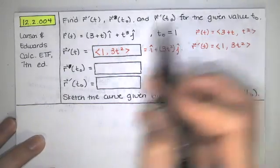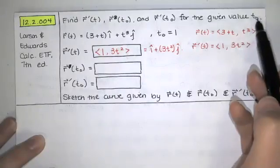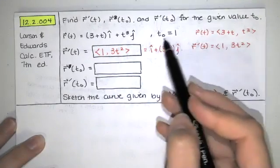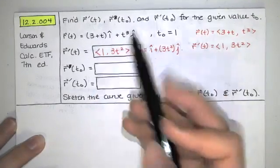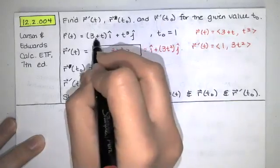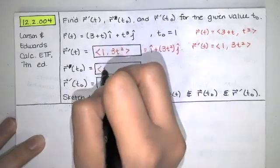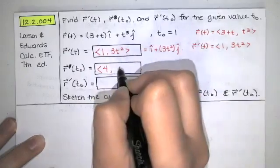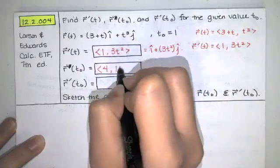I'm going to ask you for r evaluated at t naught. That's r evaluated at t naught equals 1. You just plug in 1 here and here. Well, if t equals 1, I'll have 3 plus 1, which is 4, and 1 cubed. There is my y component, which is of course 1.